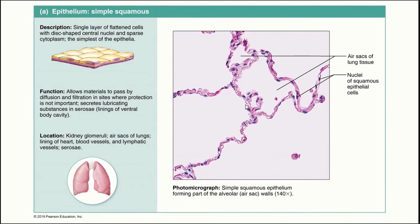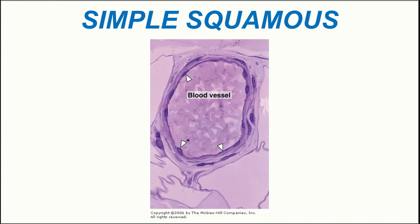They are also found in the alveoli, or air sacs of the lungs, because they are thin and promote the diffusion of respiratory gases like oxygen and carbon dioxide across the plasma membranes of the cell. They also line the inner walls of the heart and blood vessels, where their flat shape gives the walls a smooth surface so blood can flow without interruption or turbulence. The white arrows here indicate the simple squamous epithelium lining the inner wall of a blood vessel.